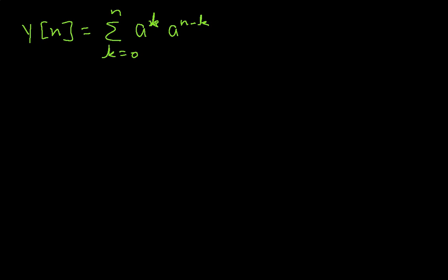Well, in a manner similar to what we did before, we can write this as a to the n, a to the minus k. And you can see now that we have an a to the k times a to the minus k. And a to the k times a to the minus k is 1.